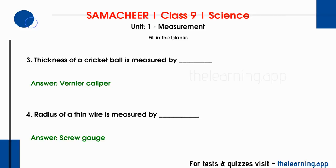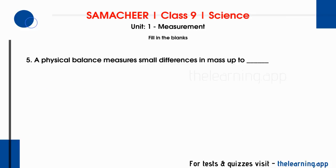Fourth question: physical balance measures small differences in mass up to — correct answer is 1 mg or less. A physical balance can measure very small differences in mass down to 1 mg, whereas a beam balance measures in grams.